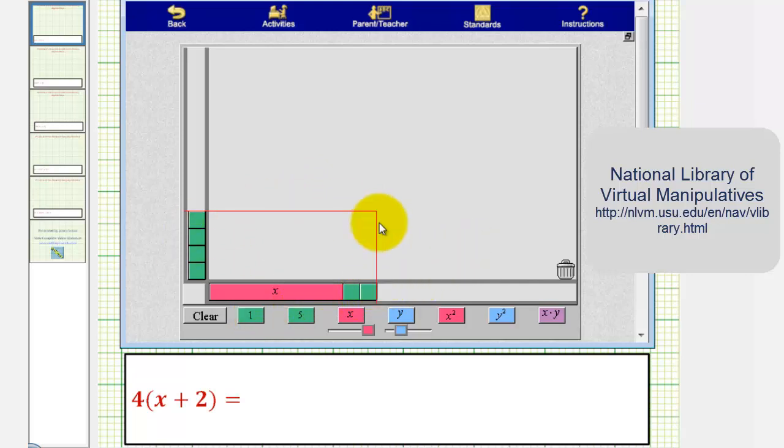The area of the rectangle formed will give us the product of four and the quantity x plus two. So looking at the left side of this rectangle, notice how we can fit several x tiles here. We can actually fit four of them here. One, two, three, and four.